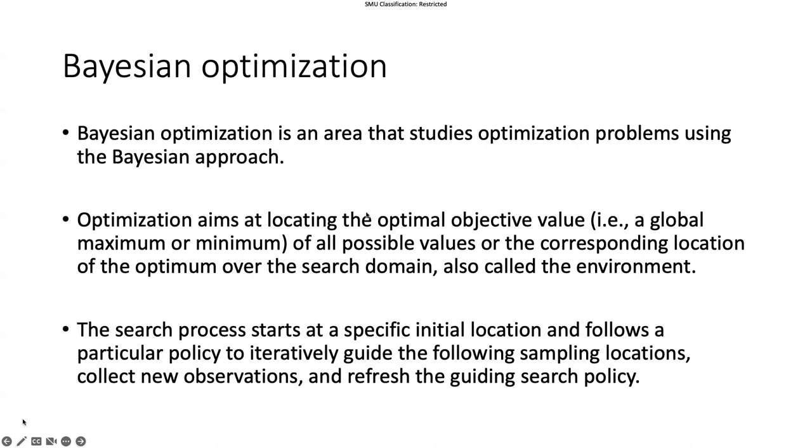So Bayesian optimization is a technique that's well developed. There's a long string of theory and also practical methods to tackle this type of global optimization problems. It tackles the problem using the Bayesian approach. That's why it's called Bayesian optimization.